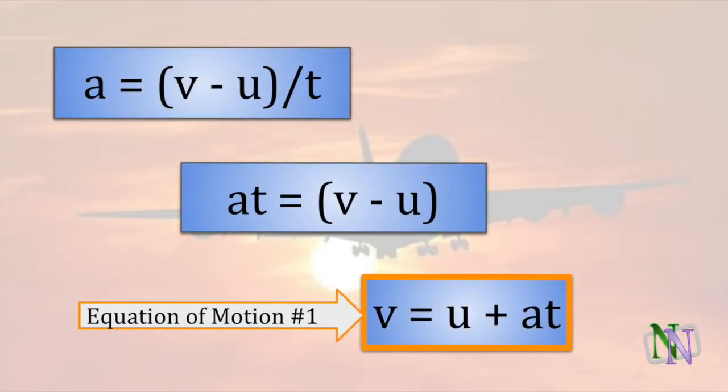Here is the first one, which is made by rearranging the definition of acceleration. V equals U plus AT. Each equation includes four of the five variables. Another way of looking at it is that one variable is not included in the equation. For example, V equals U plus AT includes V, U, A and T, but not S.